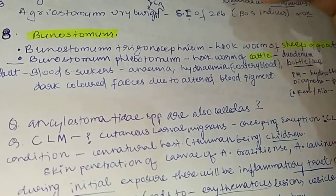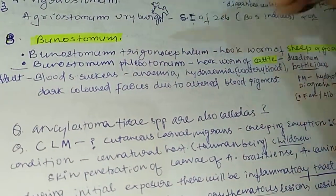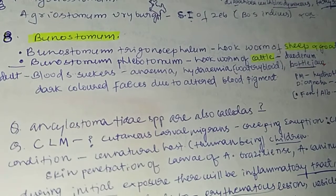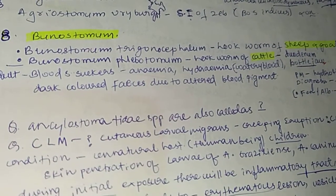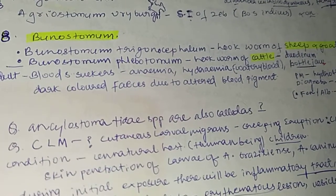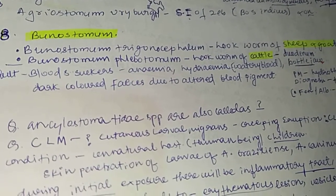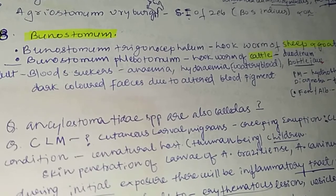In this video, we will discuss about genus Buenostomum — Buenostomum trigonocephalum and Buenostomum phlebotomum. These are the two species we are going to study.